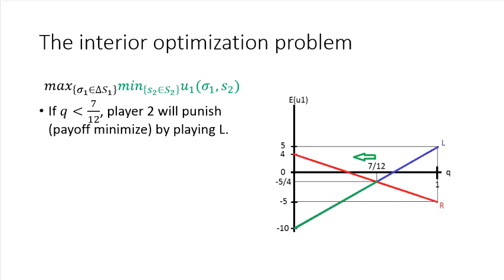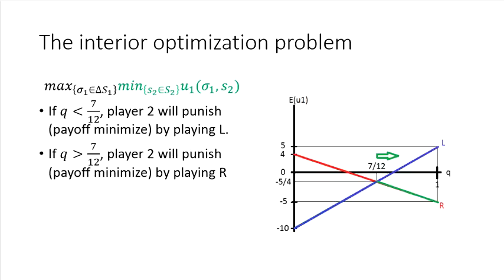Now, on the other hand, if Q is bigger than 7 over 12, then the opposite is going to be the case. Player two would wind up choosing R in order to payoff minimize against player one.